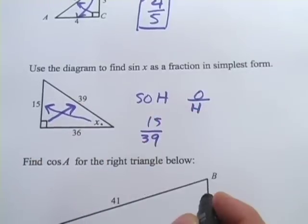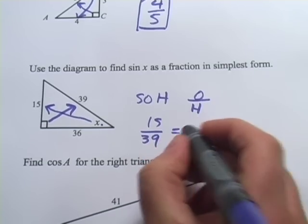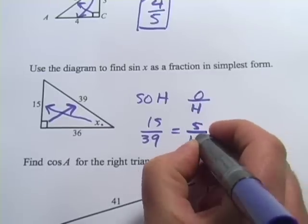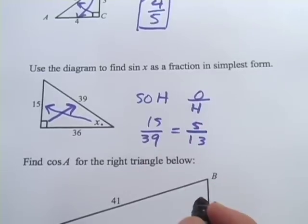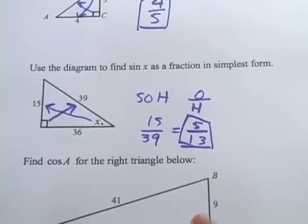So that's 15/39, but they said in simplest form. So let's see, can we take anything out of here? I think we can take a 3 out of the top and the bottom. And that would give us 5/13. And that looks like we can't reduce it any further. So sine of X is 5/13.